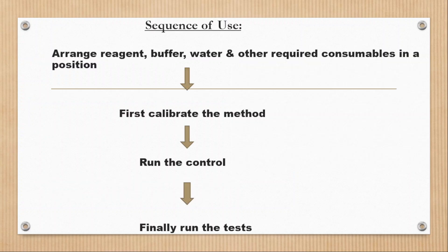Okay, now here is the sequence how we should conduct calibrate, control, and test in clinical lab. Arrange reagent, buffer, water, and other required consumables in position. First calibrate the method. After calibration success, run the control. If control result is within range, go for the test.